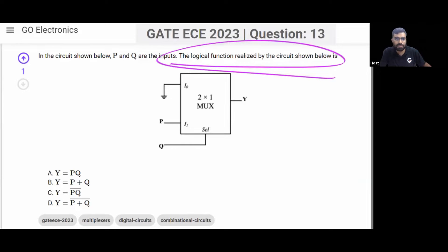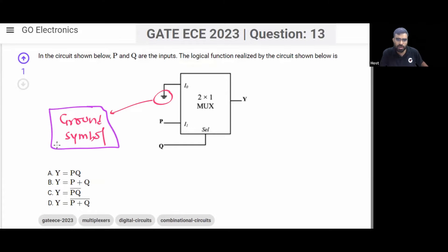The question is asking what function is implemented by this circuit. Remember, this symbol means ground. This is the ground symbol. This ground symbol indicates logic 0.